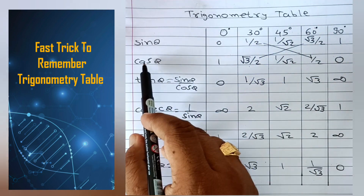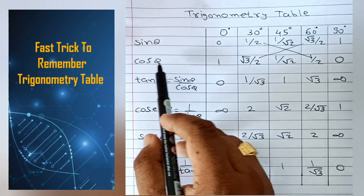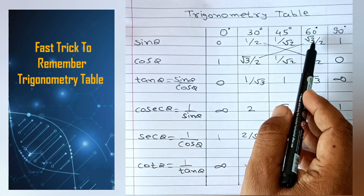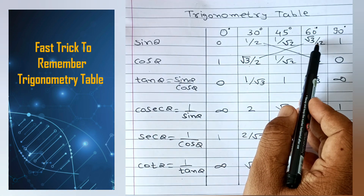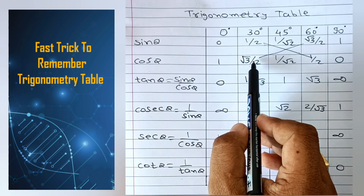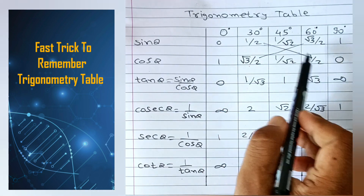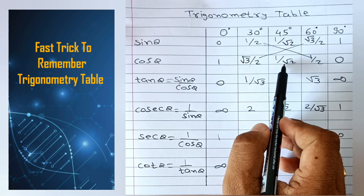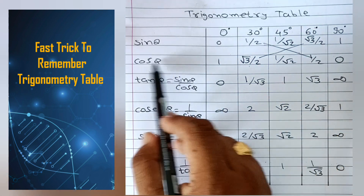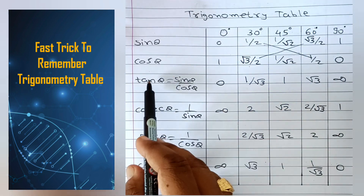Now students for cos theta, here you can see that cos 0 is 1. Then root 3 by 2 and root 3 by 2 are the same, this 1/2 and this 1/2 are the same, and this 1 upon root 2 and 1 upon root 2 are the same. Cos 90 degree is 0.